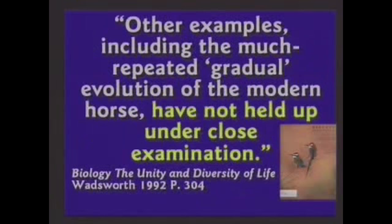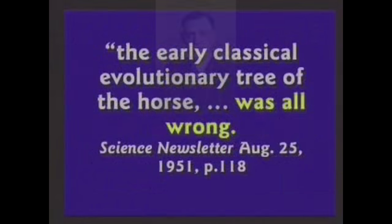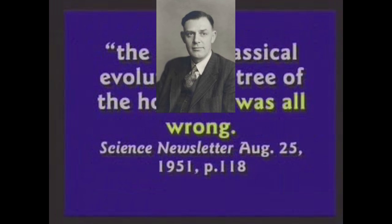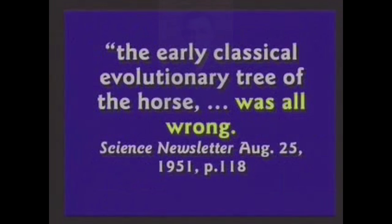The quote — 'Other examples, including the much-repeated gradual evolution of the modern horse, have not held up under close examination' — was the preamble to an explanation of the then-recently fleshed-out theory of punctuated equilibrium. This is also why Professor Thomas Stanley Westall, Durham University geologist, told the British Association for the Advancement of Science at Edinburgh: 'The ancestral family tree of the horse is not what scientists have thought it to be.' The early classical evolutionary tree of the horse, beginning with the small dog-sized Eohippus and tracing directly to present-day Equus, was all wrong — meaning it was anything but orthogenic.